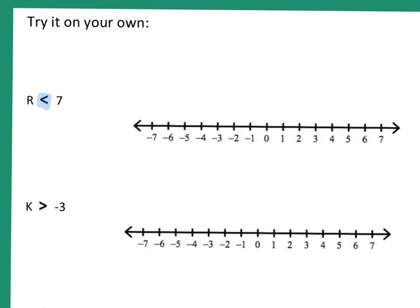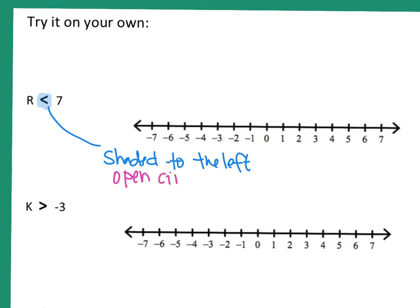The first thing to look at is the symbol. This is less than — if it's only less than, I'm going to shade to the left. Because it's only less than, I will have an open circle on 7. Draw the open circle on 7, then shade to the left all the way to the end of the number line and put an arrow on the end to show it keeps going forever in that direction.